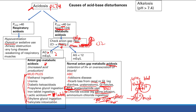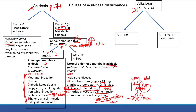Alkalosis — pH greater than 7.4. Same trick as always: look at pH and CO2. If they're in opposite directions, it's a respiratory alkalosis. If pH and CO2 both go in the same direction — both increased — it's a metabolic alkalosis.